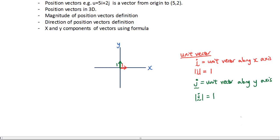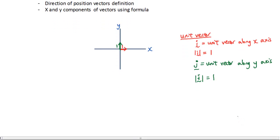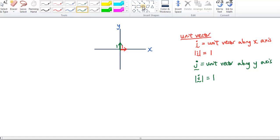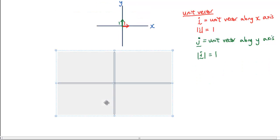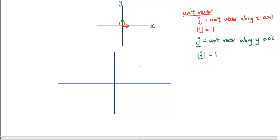So what's the point of unit vectors? Well, based on these unit vectors, we can then identify position vectors. So I'm going to draw another Cartesian plane and identify a single point on this plane. Let's call this point A.